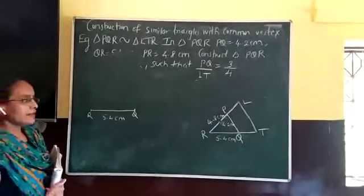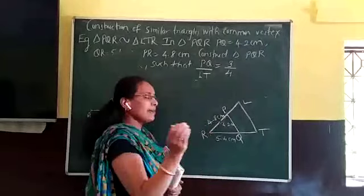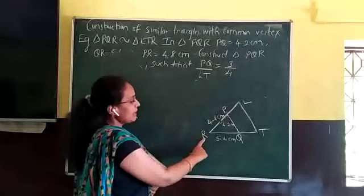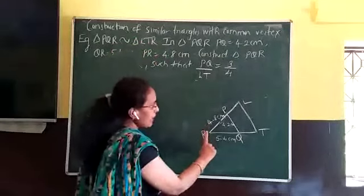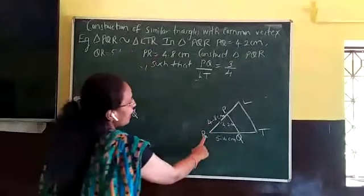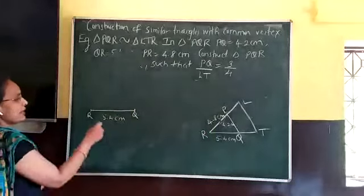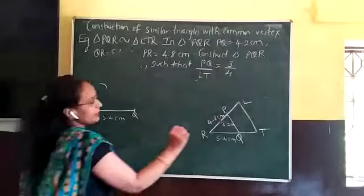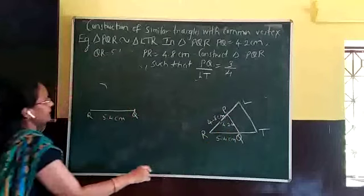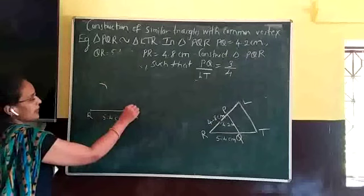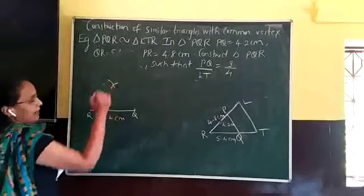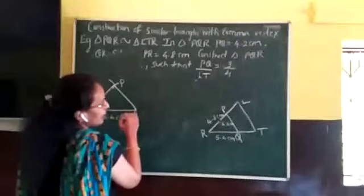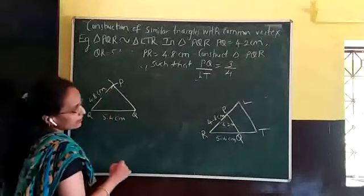You might ask: is this the way to name the triangle always? You can name it any way, but the most convenient way is getting the common vertex placed at a corner — either on the left or the right. The common vertex shared by both triangles is R, so conveniently I have placed R on one side. From R to P, the distance is 4.8 cm, so with the help of a compass and scale I measure 4.8 cm and draw the arc. Now triangle PQR is ready, with RP as 4.8 cm and PQ as 4.2 cm.